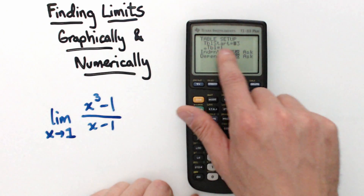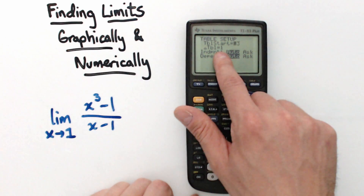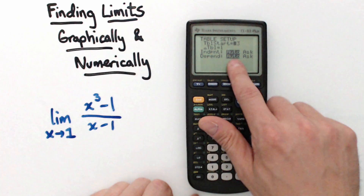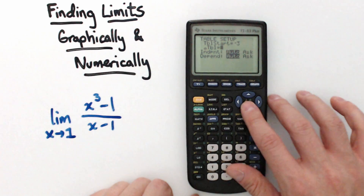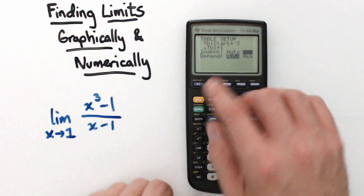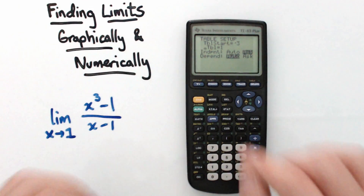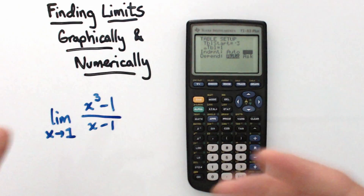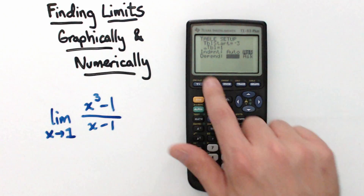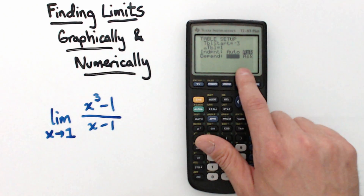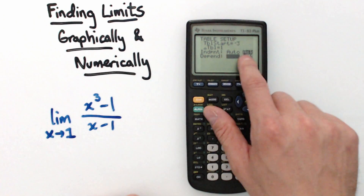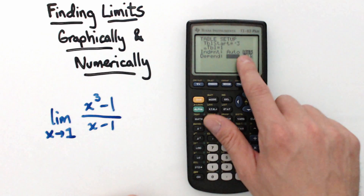To fix that, hit Second Window to open Table Setup. You can see the table currently starts at negative 3 and changes by 1, which is why it was stepping through integers. We want to change the Independent setting from Auto to Ask, so the calculator will ask us which x-values to enter rather than generating them automatically. We'll leave Dependent on Auto so it calculates the y-values for us.